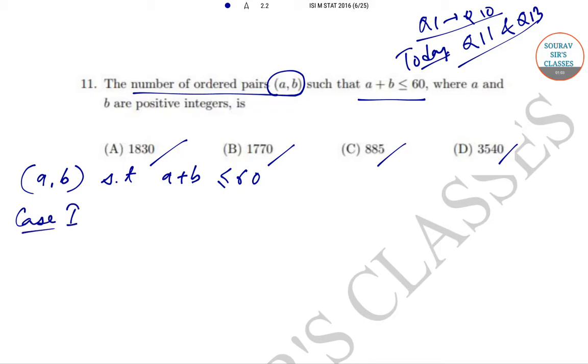For case 1, it can be that a and b are less than or equal to 30. This is case 1, and there can be case 2 where either a or b is greater than 30.